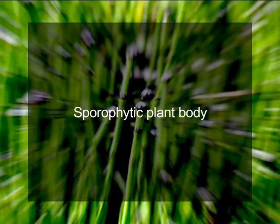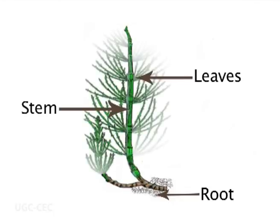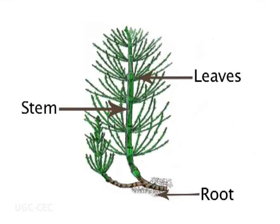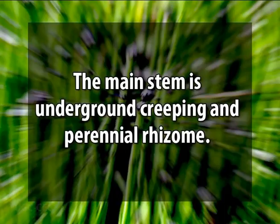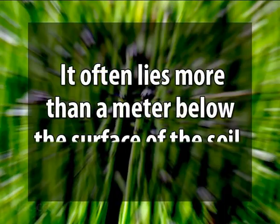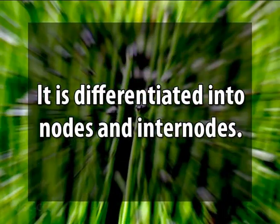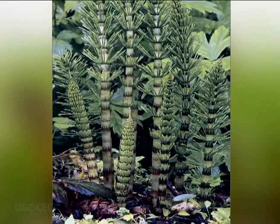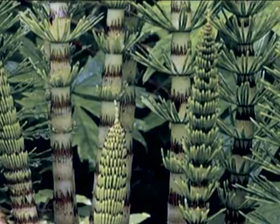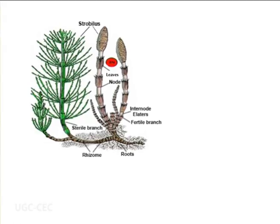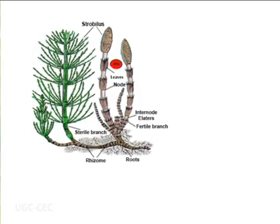Now let us discuss its sporophytic plant body. The sporophyte of Equisetum has a perennial, branched, and creeping underground rhizome, which gives annual erect aerial branches. The sporophyte is differentiated into stem, root, and leaves. The main stem is underground, creeping, and a perennial rhizome, which often lies more than a meter below the surface of the soil. The stem is differentiated into nodes and internodes, with a whorl of small scaly leaves at each node. These leaves are joined at their bases, forming sheaths around the node. The rhizome bears two types of aerial shoots: vegetative shoots and fertile shoots.